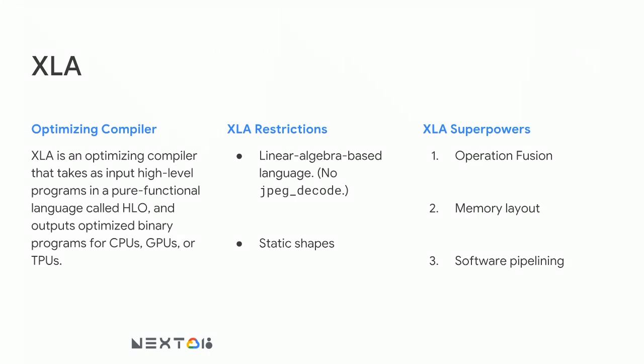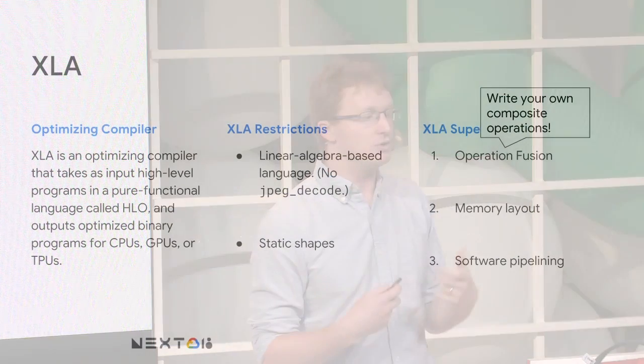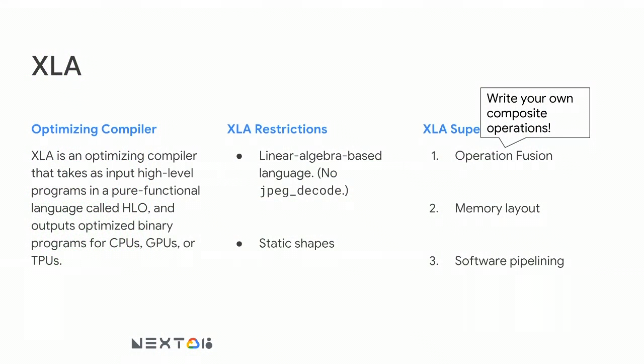In exchange for these restrictions, XLA gives you superpowers. The first is Operation Fusion. If you sum three large matrices but your library only supports summing two at a time, you'd write to a temporary value — a significant performance cost. XLA sees your whole program and optimizes everything, giving you the optimal program without you specifying it. This means you can write your own composite operations and invent your own primitives, which get compiled to high-performance programs running on the TPU.